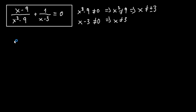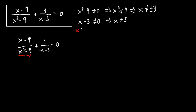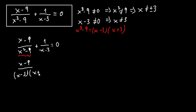Let's continue and rewrite it. We have x minus 9 over x squared minus 9, plus 1 over x minus 3, equals 0. The denominator x squared minus 9 can be factored as x minus 3 times x plus 3. So we have x minus 9 over x minus 3 times x plus 3, plus 1 over x minus 3, equals 0.